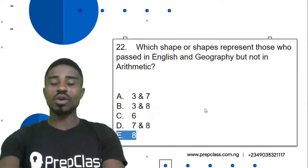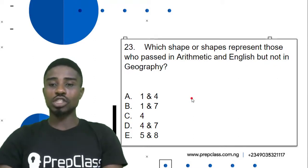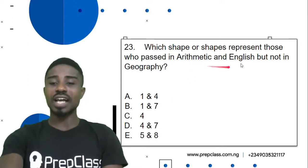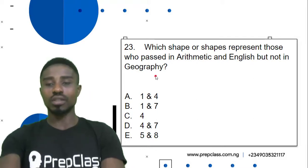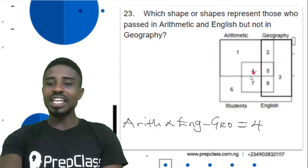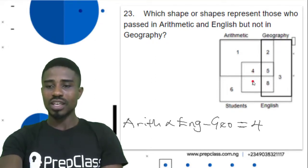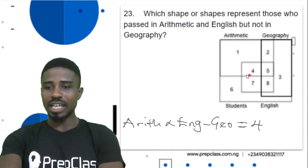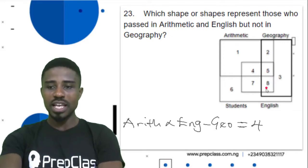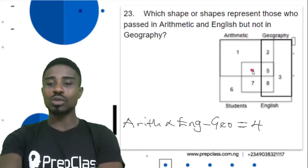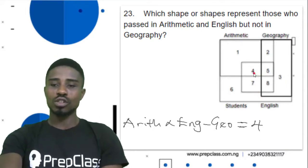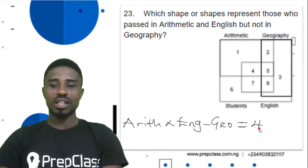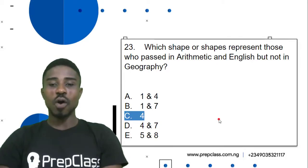Question 23: Which shape or shapes represents those who passed in arithmetic and English but not in geography? We are looking for arithmetic and English, not geography. Region 5 includes geography, region 8 includes geography, and region 7 is only English excluding arithmetic. But region 4 is for arithmetic and English, not geography. So 4 is our correct answer. Question 23, option C — 4 is our correct answer.